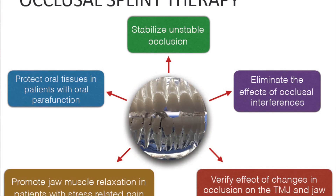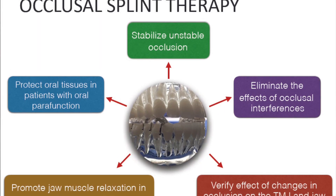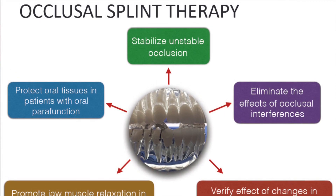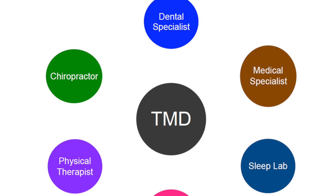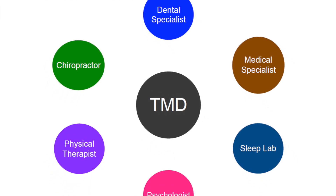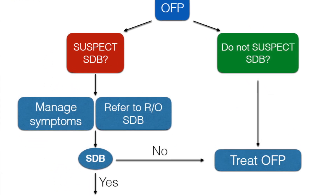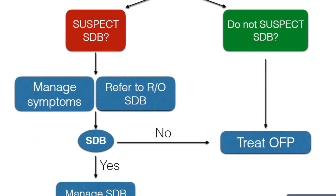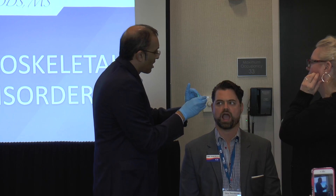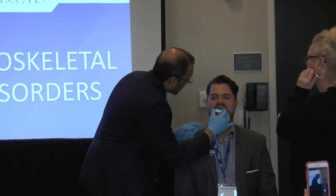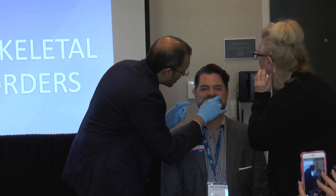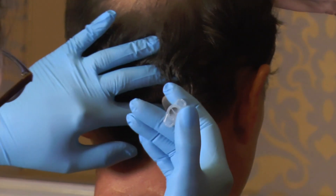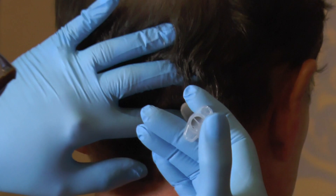Treatment options will be discussed. Sometimes splint therapy is required. Many times working with adjunct healthcare providers is just as important. Understanding where and when to refer and where and when to do the necessary treatments required to get your patients out of pain is critical.